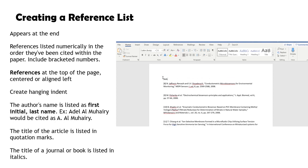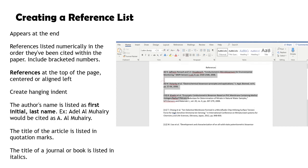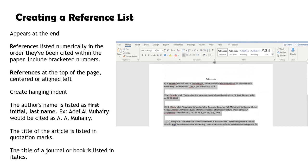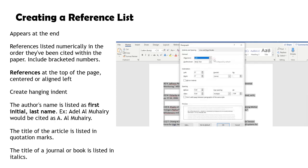Title your list as references, either centered or aligned left at the top of the page. Create a hanging indent for each reference with the bracketed numbers flush with the left side of the page. The hanging indent highlights the numerical sequence of your references.